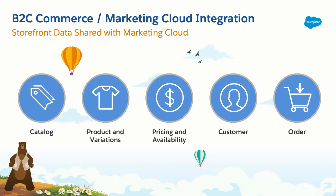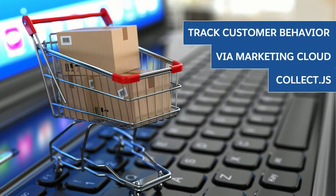In order to make all of this work, we need data. Here's the data we leverage from Commerce Cloud: catalog data — specifically product and product variation data — pricing and availability. We have the ability to tell Marketing Cloud in near real time through Marketing Cloud's REST API when products become available or when they do not, because you don't want to recommend a product you can't sell. We're also importing customer data for segmentation, order data to help inform recommendations, and tracking customer behavior if you've implemented Personalization Builder through Marketing Cloud's Collect.js.